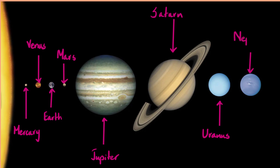So you need to know the order from the sun: Mercury, Venus, Earth, Mars, Jupiter, Saturn, Uranus, and Neptune. This order is something you must know.